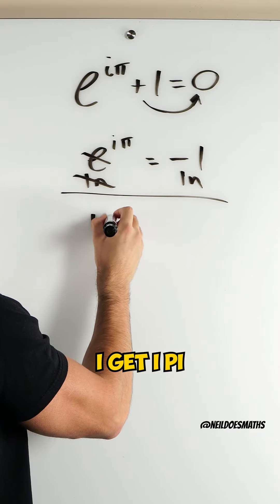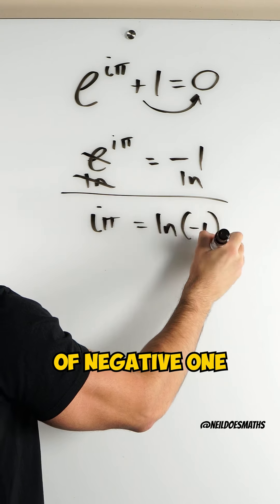These cancel. I get i pi equals ln of negative 1.